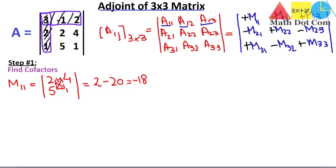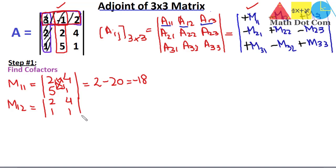So M11 = −18, and we put this value in the cofactor matrix. Next, M12 is the minor of the element at row 1, column 2 — that is, the element −1. We delete that row and column and take the determinant of the remaining elements: 2, 1, 4, 1. The determinant is 2×1 − 1×4 = 2 − 4 = −2.